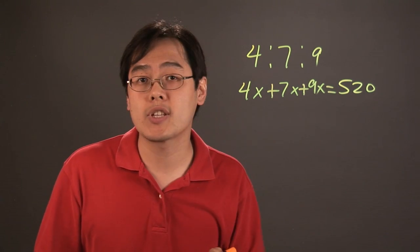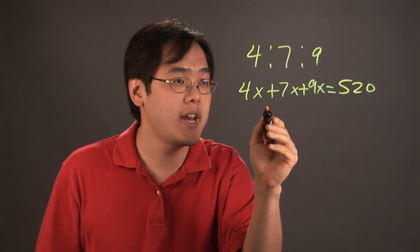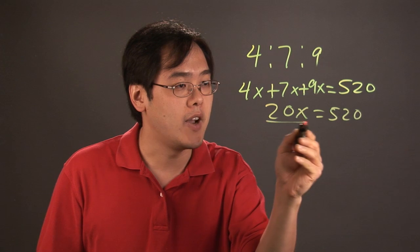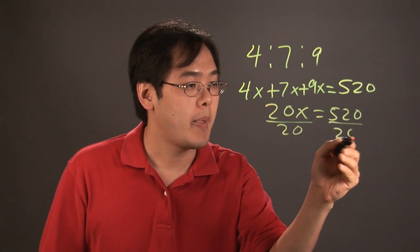Now, all you have to do is just simplify that. 4x plus 7x plus 9x is going to give you 20x, that's going to give you 520, and then divide both sides by 20.